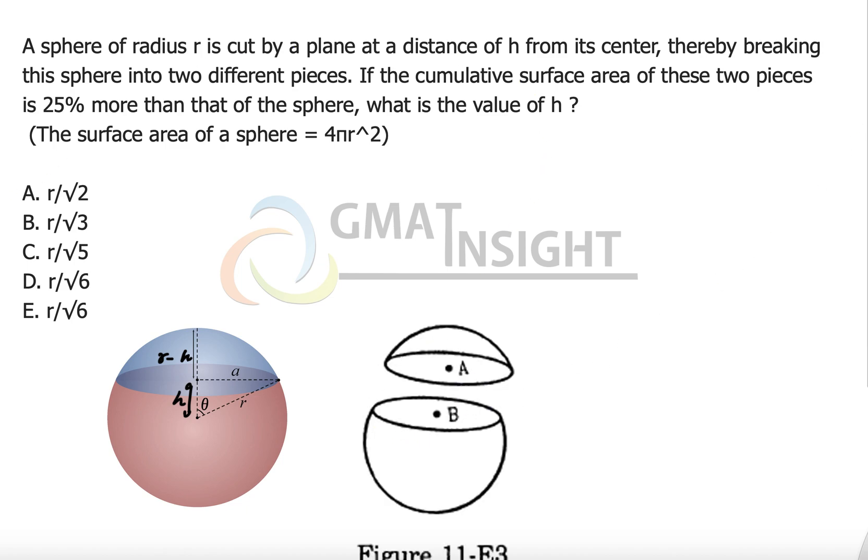So we have these two pieces. Now the question says if the cumulative surface area of these two pieces is 25% more than that of this sphere, what is the value of h? Now this 25% extra, why exactly has this come into picture? That's what we need to understand.